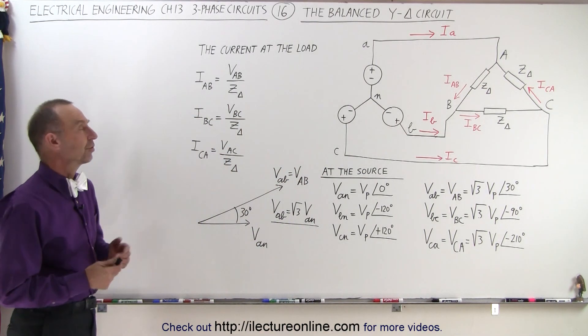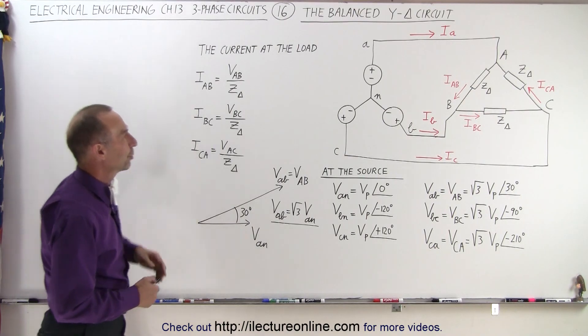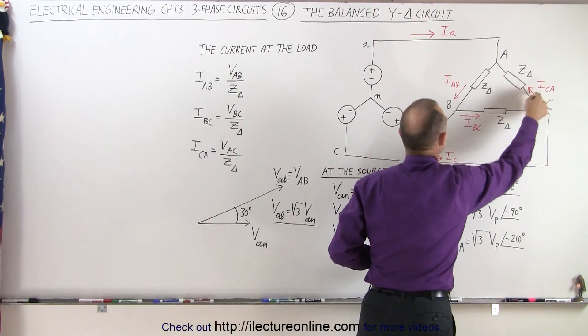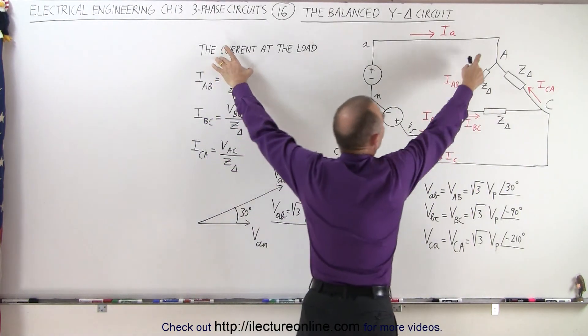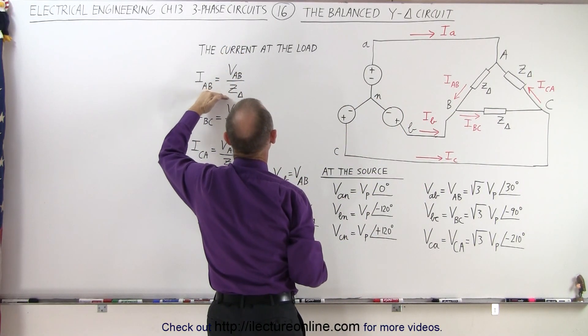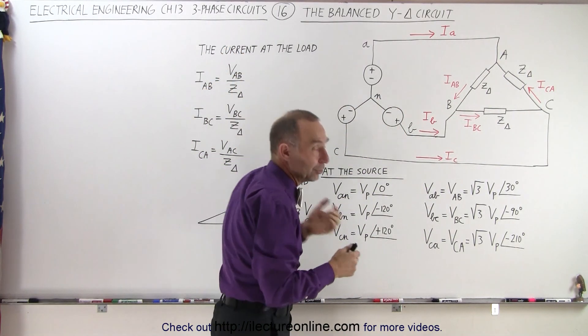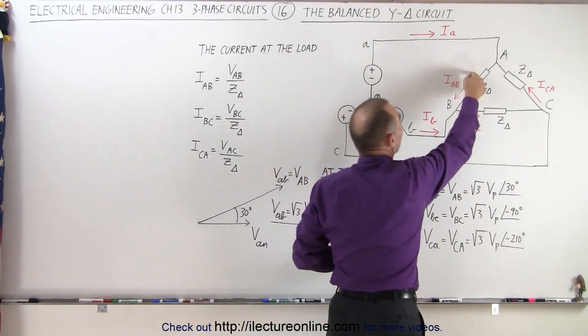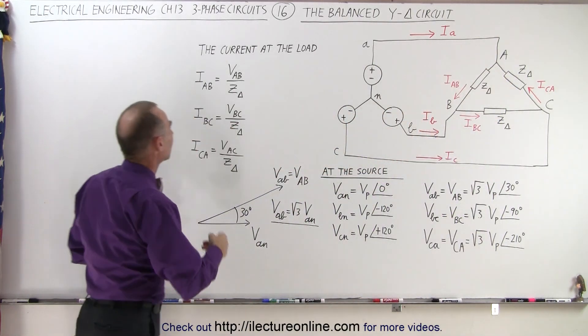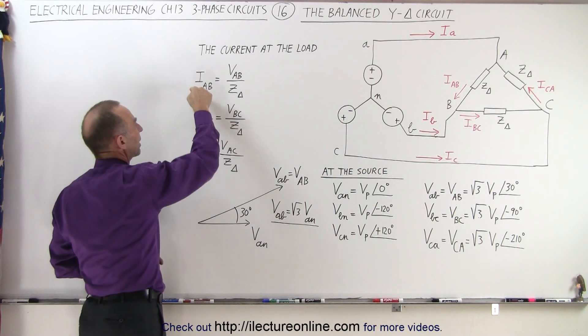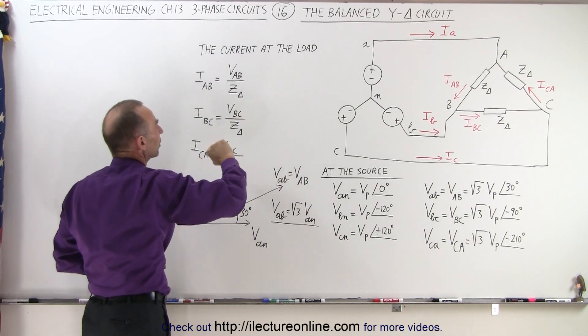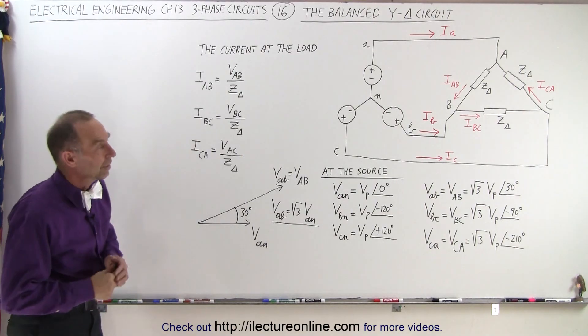Finally, the currents at the load. We can determine the currents IAB, IBC, and ICA by taking the voltages VAB, VBC, and VCA and dividing by the load impedance. To have a balanced load, the impedances must be the same on all three phases. If the impedances are the same, we calculate the currents by taking the line voltage divided by the balanced impedance.